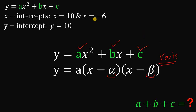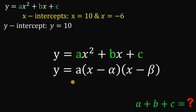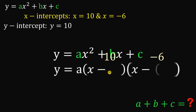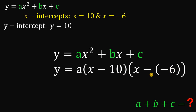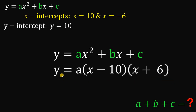We know alpha and beta because the x-intercepts are x equals 10 and x equals negative 6. So we can replace alpha with 10 and beta with negative 6, since these are the roots. Doing that gives us y equals a times x minus 10 times x minus negative 6. Simplifying the negative of negative 6 gives positive 6, so we have y equals a times x minus 10 times x plus 6.